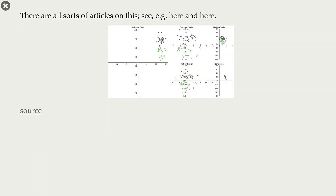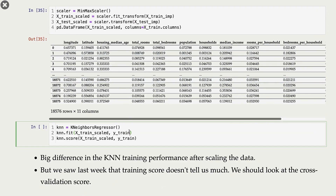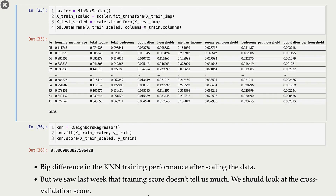For MinMaxScaler I do the same thing: create the object, call fit_transform on training data and transform on test data. After transformation, all values are in the range 0 to 1. Training KNN with MinMaxScaler again shows a big improvement compared to unscaled data, but we don't see a big difference between MinMaxScaler and StandardScaler results. At this point you might wonder why we are looking at training scores — they don't tell us about test scores or deployment performance. We should be carrying out cross-validation, and in the next video we will talk about this and its relation to the golden rule.